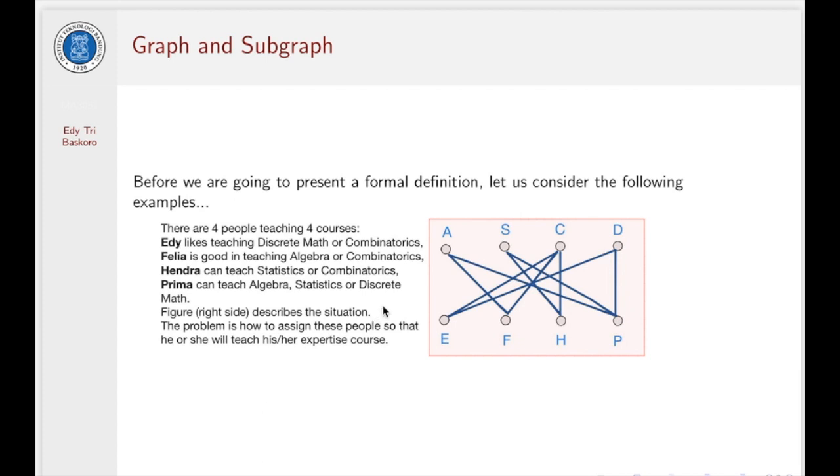Before we giving you the formal definition of a graph, let us consider several examples here. The first example, suppose in mathematics department, there are four professors with their expertise in teaching as follows. First professor, Eddie, liked teaching discrete mathematics or combinatorics. And then failure is good in teaching algebra or combinatorics. Hendra is keen in teaching statistics or combinatorics. Prima can teach very well in algebra, statistics, or discrete mathematics. Figure on the right side describes this situation.